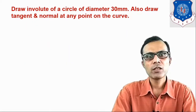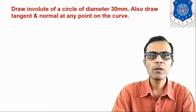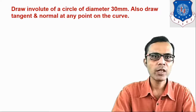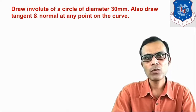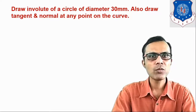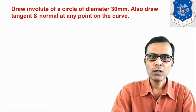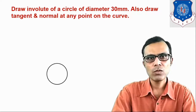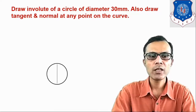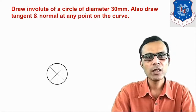Now let's see the procedure to draw an involute for a circle. The given data is: draw an involute of a circle of diameter 30 mm. In the case of a circle, if a string is wound, the required length of the string is equal to the circumference of the circle. Here diameter is 30 mm, so circumference equals pi into d — that is the required length for one complete rotation. To draw the involute, first draw a circle of diameter 30 mm, taking radius 15 mm. We divide the circumference into 8 equal parts, with each division equal to 45 degrees.